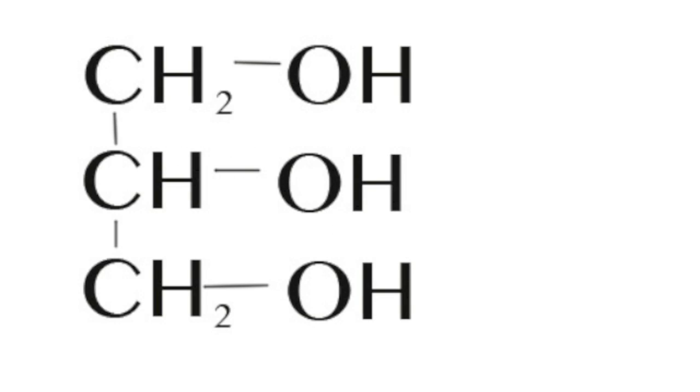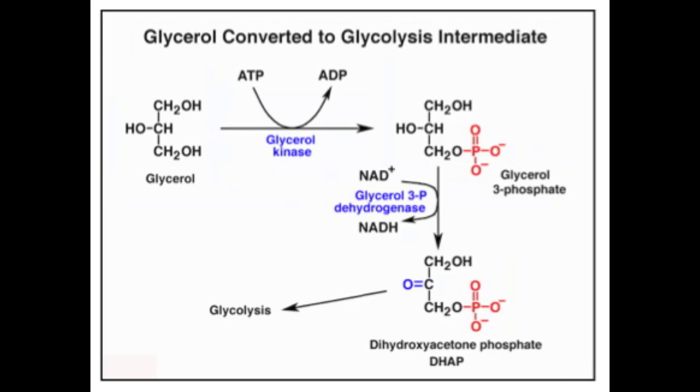The glycerol molecule can be converted to a glycolysis intermediate. In the first step, glycerol kinase transfers one phosphoryl group from ATP to glycerol to create glycerol 3 phosphate.